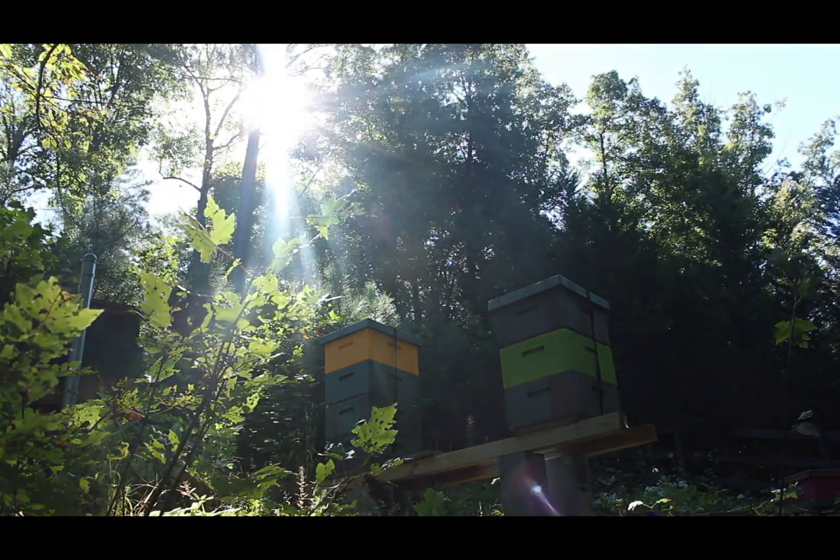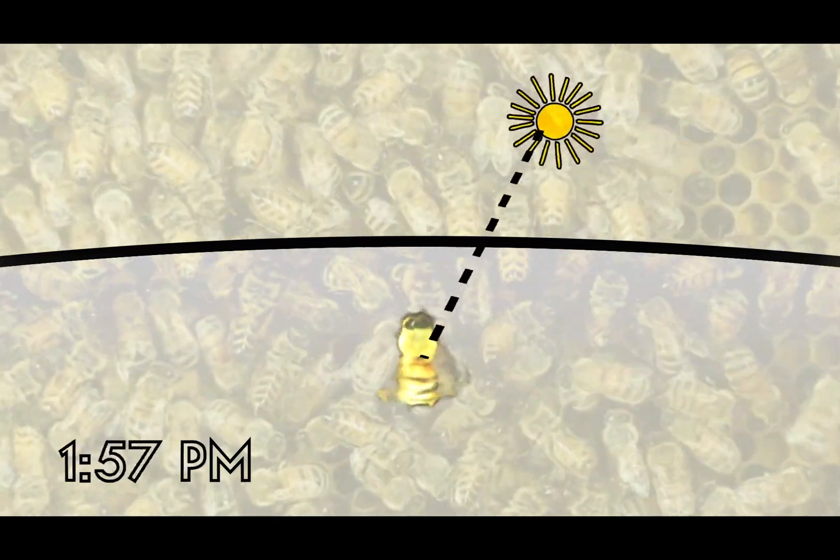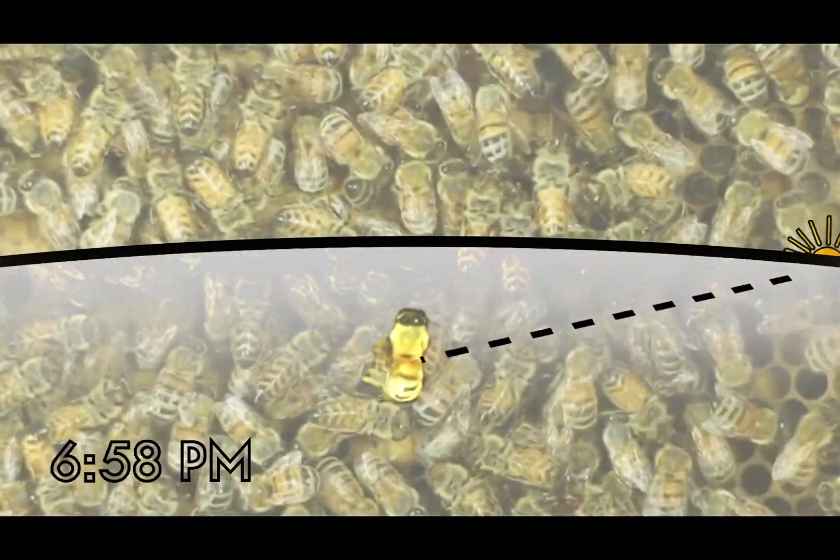This clock is accurate enough for the bees to constantly estimate the new position of the sun as it travels across the sky.